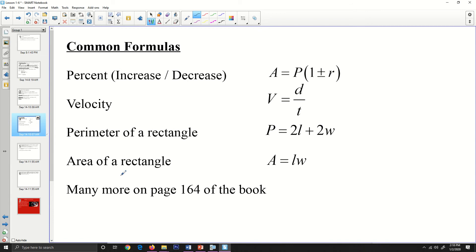Some common formulas that you might see: percent increase or decrease, and this is like a simple interest, is going to be the amount times one plus whatever rate increase or decrease you're going to do. Decrease R would be negative, and you just do a simple interest there. Velocity equals distance divided by time. The perimeter of a rectangle is P equals two times the length plus two times the width. The area of the rectangle is area equals length times width. There are many more on page 164 of the book, and I suggest you take a look at those because you may be asked to use some of those in the practice work.